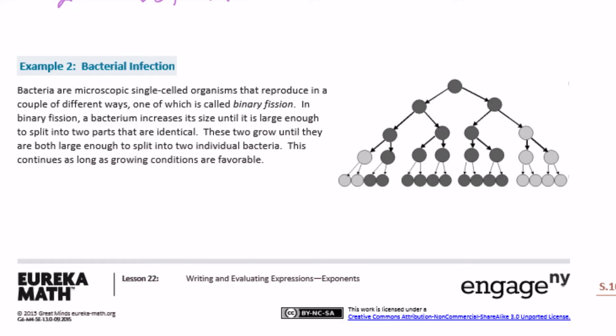Example 2: bacterial infection. Bacteria are microscopic single-celled organisms that reproduce by binary fission — a bacterium increases its size until it's large enough to split into two identical parts. These two grow until they split again, and this continues as long as growing conditions are favorable. This is just like cutting the piece of paper — one turns into two identical ones, and they keep splitting on and on.